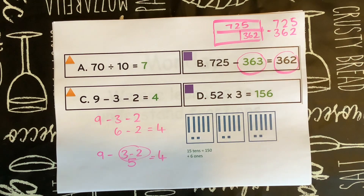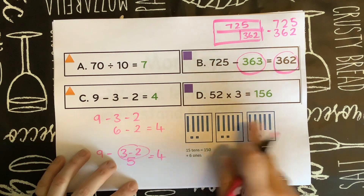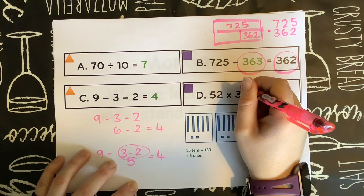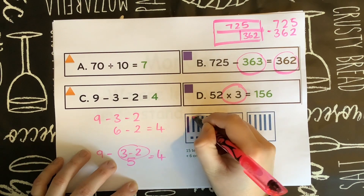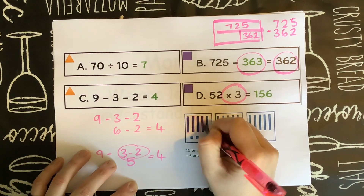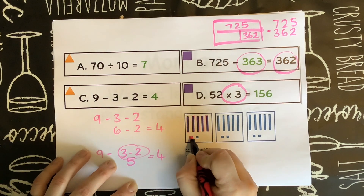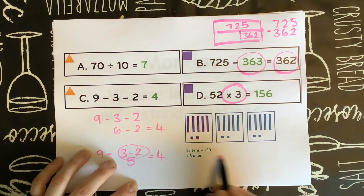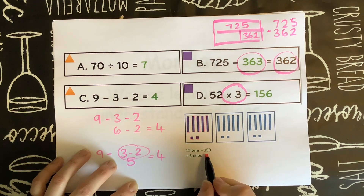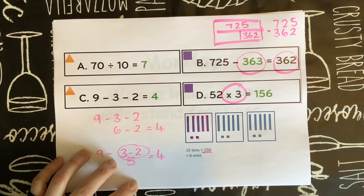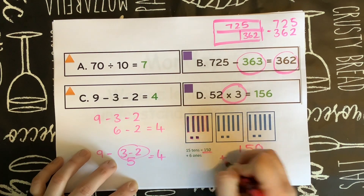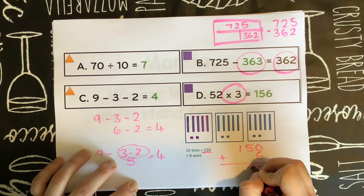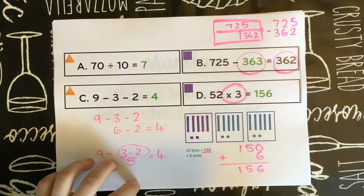Lastly, 52 times 3. I've made myself three groups because I have three lots of, and then I have five tens and two ones. Calculated: three times that gives me 15 tens, which I know is the same as 150, and six ones. If I do 150 add six I get 156, which is the answer.